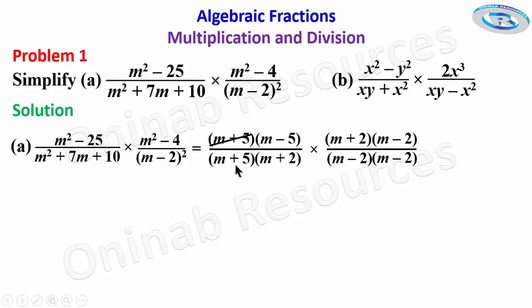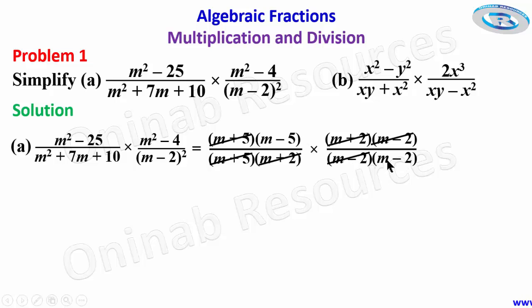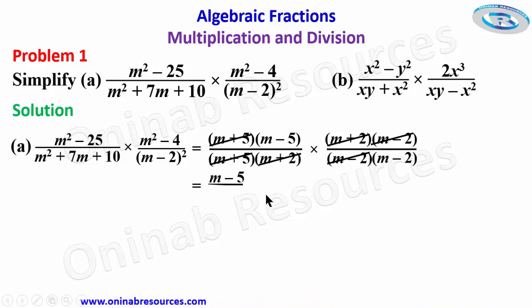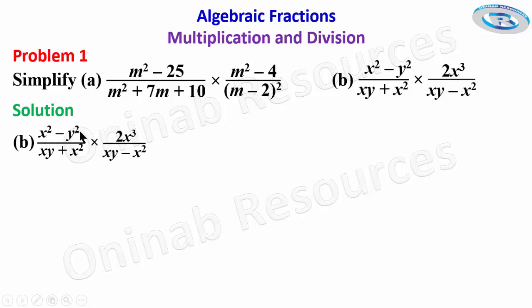We now see what cancels. m plus 5 cancels with m plus 5, m plus 2 cancels with m plus 2, and one of the m minus 2 factors cancels with the other m minus 2. We are left with m minus 5 at the numerator and m minus 2 at the denominator. So the final solution to problem 1a is m minus 5 over m minus 2.